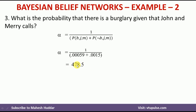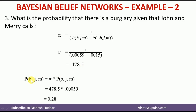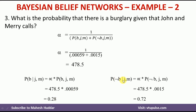Once we calculate the value of alpha, we put it into the previous equations. Probability that burglary is present given John and Mary has called equals alpha multiplied by 0.00059, which gives 0.28. Probability that there is no burglar given John and Mary equals alpha multiplied by 0.0015, which gives 0.72. You can cross-check your answer — the addition of these two values should be equivalent to 1. If you get that, your answer is correct.